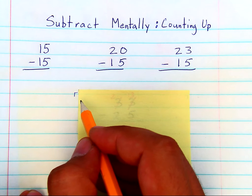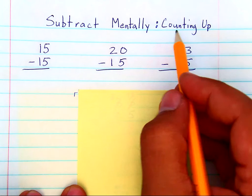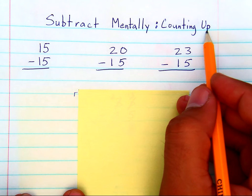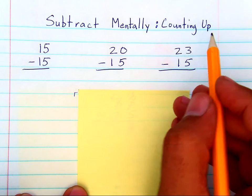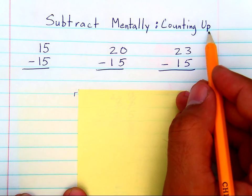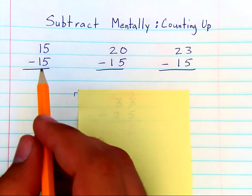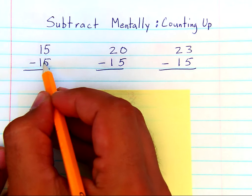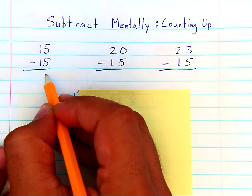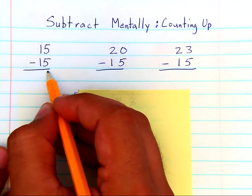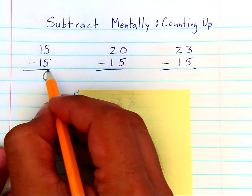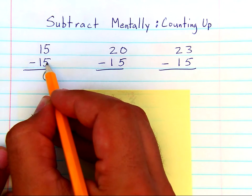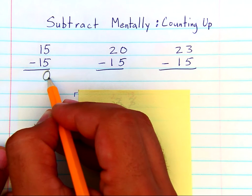One of the simplest ways to subtract mentally is counting up. When you count up, you are building an understanding that subtraction and addition are very similar. When you subtract 15 minus 15, that's really easy to figure out — the answer is zero, because if you have fifteen dollars and you spend fifteen dollars, you have zero dollars left.